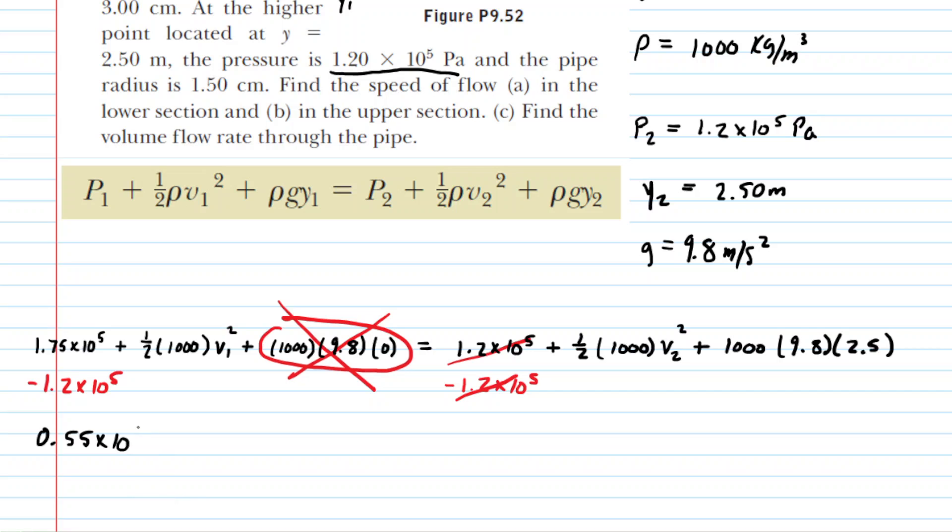We can continue simplifying. We have this 1.5 times 1,000, so that's going to be 500 times the v sub 1 squared. Over on the other side, 1.5 times 1,000 is going to give us 500 times v sub 2 squared. And then we can pick up our calculators and simplify this value by multiplying it out. You get 24,500.